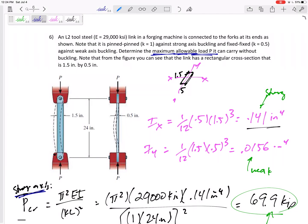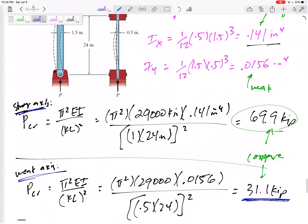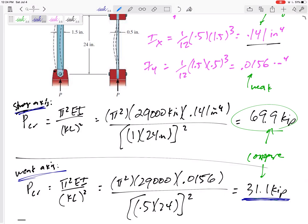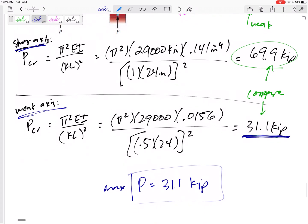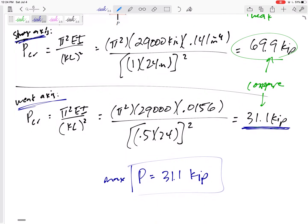Sometimes in one direction it is supported differently than in another direction. So do those two directions separately. Do the strong axis buckling and the weak axis buckling separately and compare the two. If you want the maximum allowable load P, it's going to be the smaller force because it will buckle against that smaller force before it could even get up to a force high enough to buckle the strong axis.